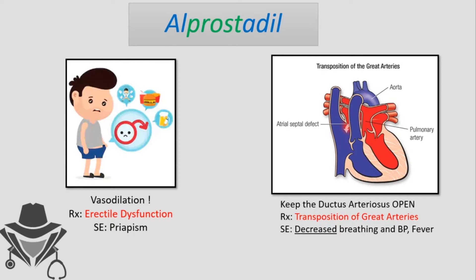Prostaglandin E1 can cause vasodilation. So if alprostadil is administered into the urethra of a male patient, it can cause erection, treating those who have erectile dysfunction. The side effect is priapism, which is a sustained painful erection.